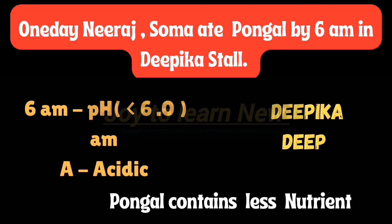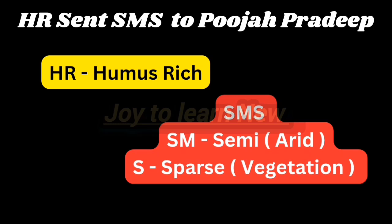Continuing the same shortcut: '6' represents pH level — it is less than 6. 'A' represents acidic. From 'Deepika,' the first four letters represent 'deep' — the soil is deep to very deep. 'Pongal' contains less nutrients — meaning this soil is generally deficient in nutrients, particularly plant nutrients.